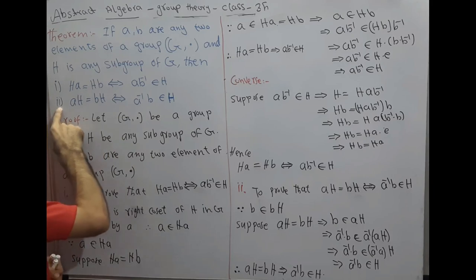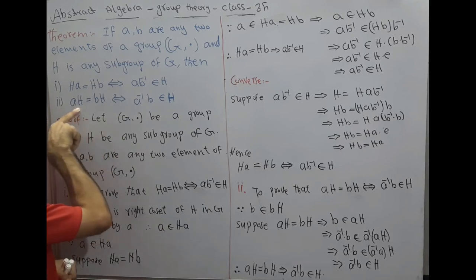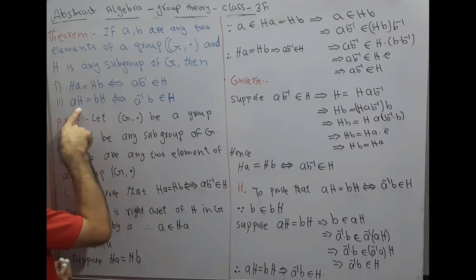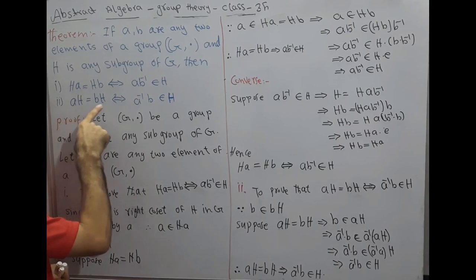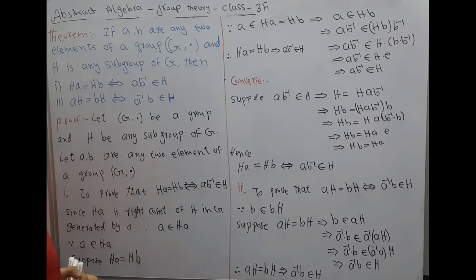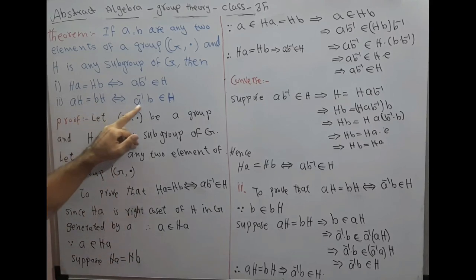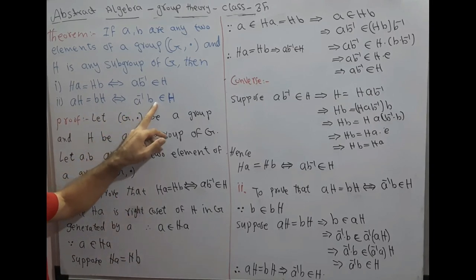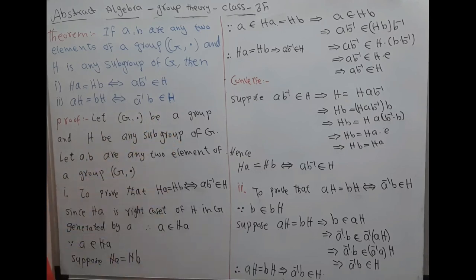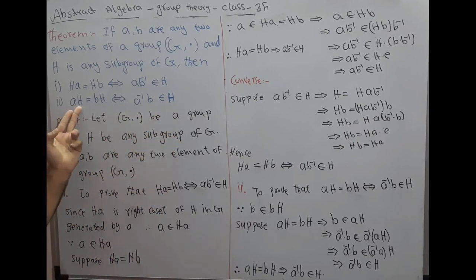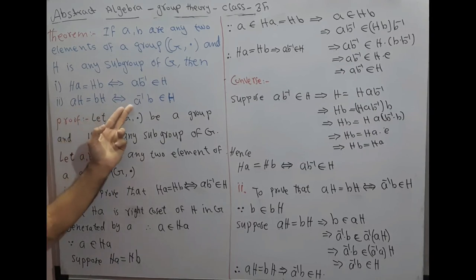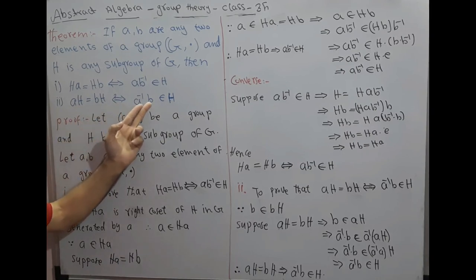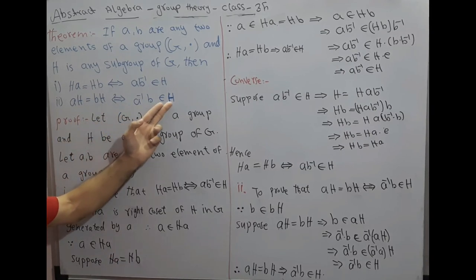Case two: The left coset aH generated by a in G equals the left coset bH generated by b in G if and only if a⁻¹·b belongs to H. That is, aH = bH if and only if a⁻¹·b belongs to H.